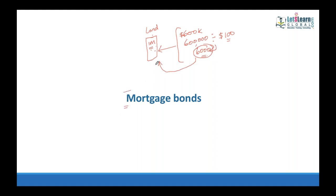Mortgage bonds come in two types: first mortgage and second mortgage. In our example, the land is mortgaged first to 6,000 bondholders of $100 each, totaling $600,000 against a $1 million property. The excess security available is $400,000 — that is $1 million minus $600,000.